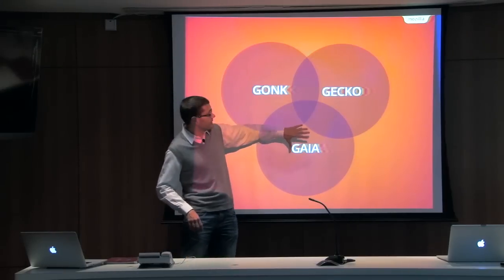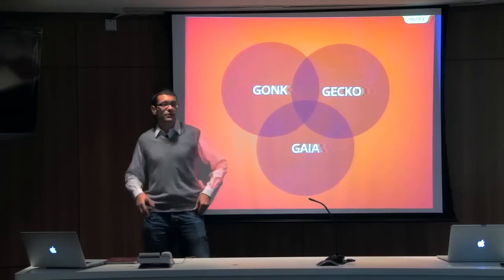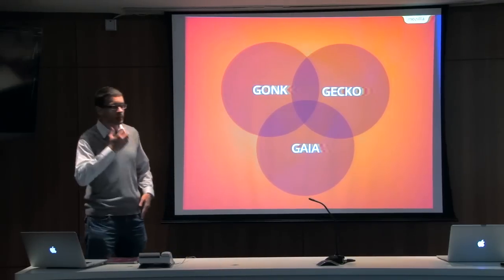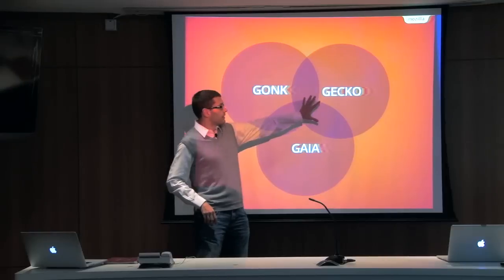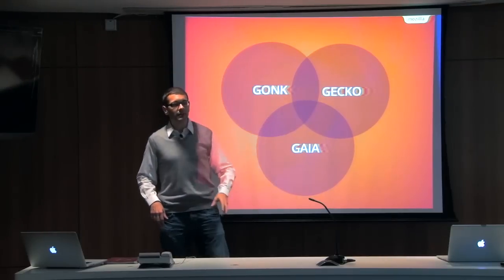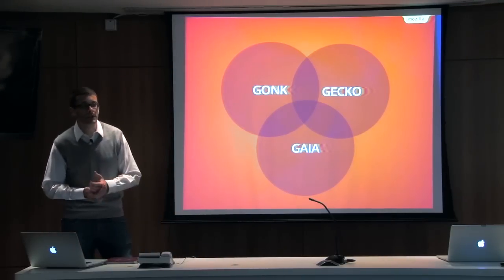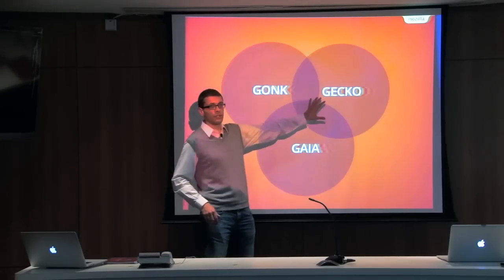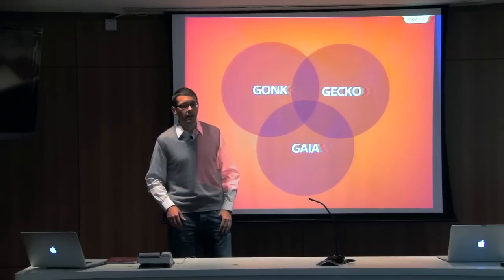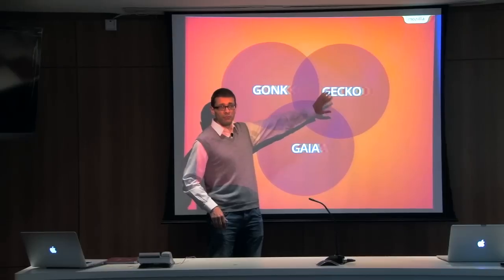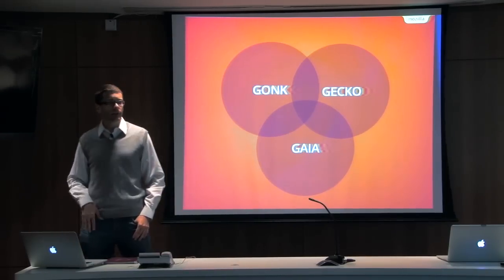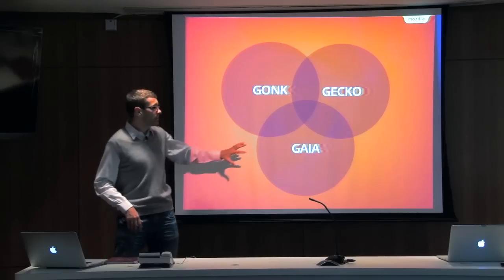And this HTML5 system sits on top of Gecko. Gecko is Mozilla's browser engine or rendering engine, as we call it. This is basically the implementation of the web stack. So Gecko implements HTML5 and implements CSS and JavaScript and a couple other web technologies like WebGL. This is actually the same rendering engine we're using in Firefox as well. So this rendering engine is used by half a billion people or so across the different devices that we support as part of Firefox.